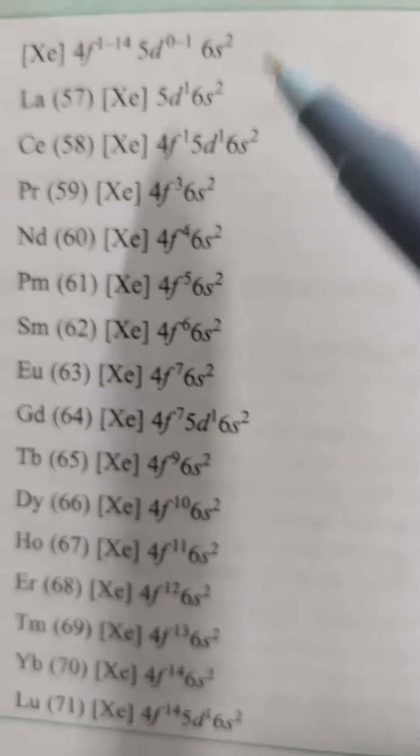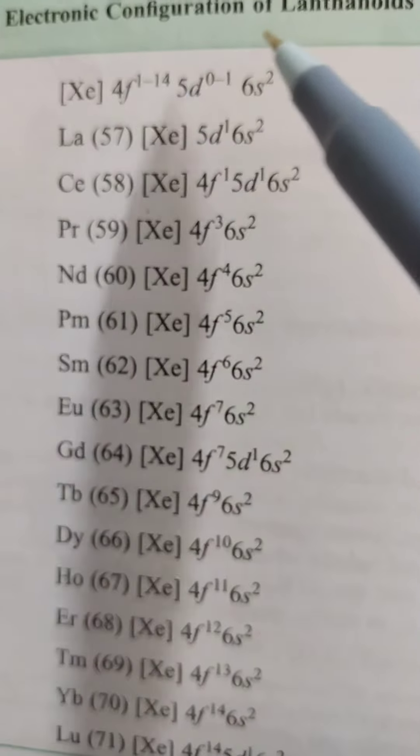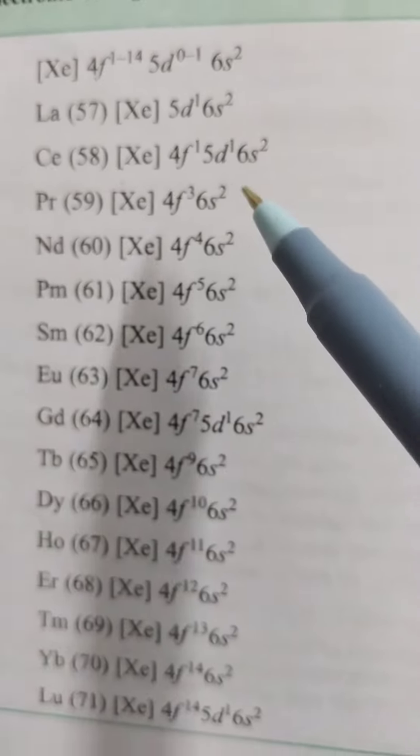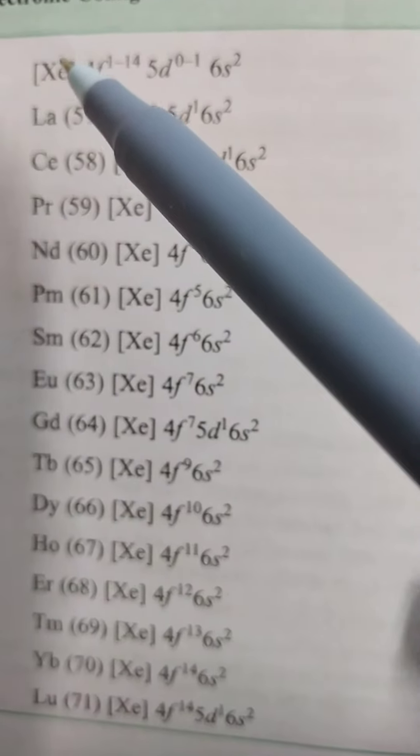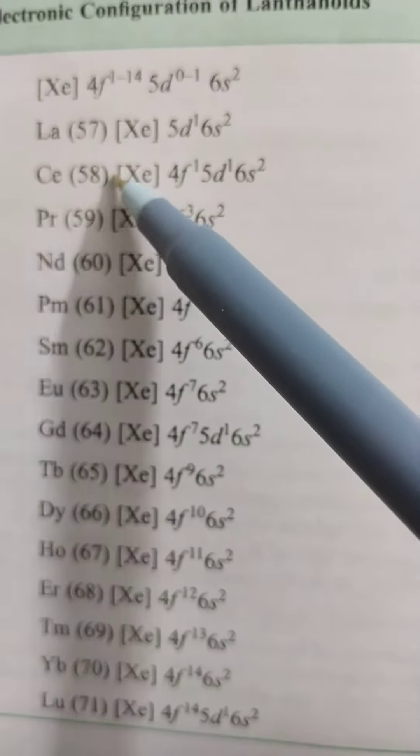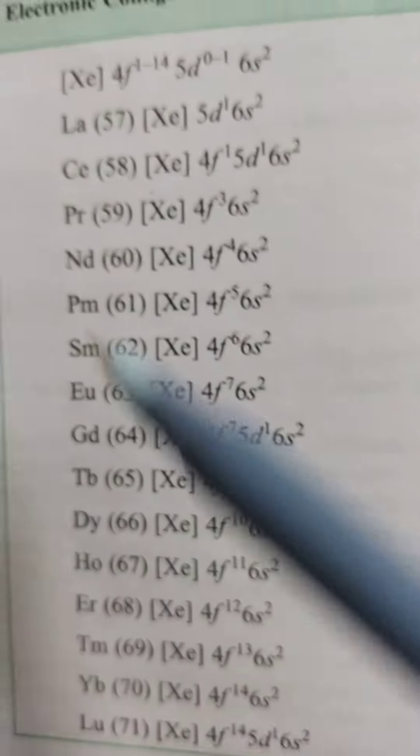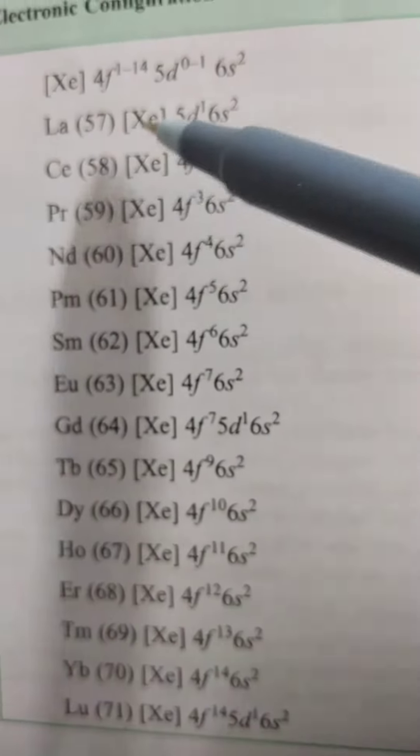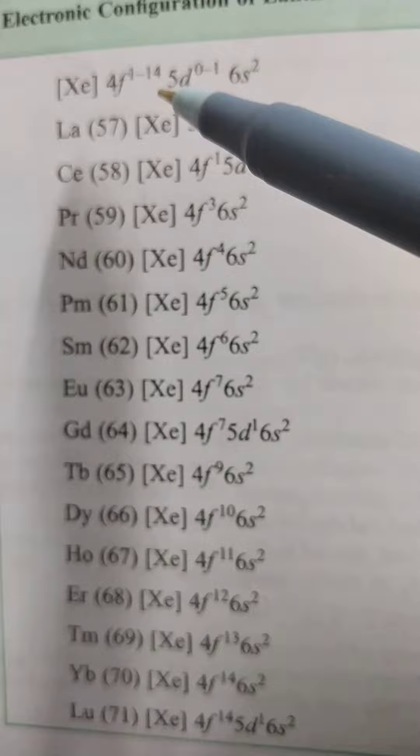My dear students, good morning to all. Electronic configuration of lanthanoids is the most important for competitive exams. You can write atomic number 58 to atomic number 71 after lanthanum. 14 elements are called lanthanoid elements.